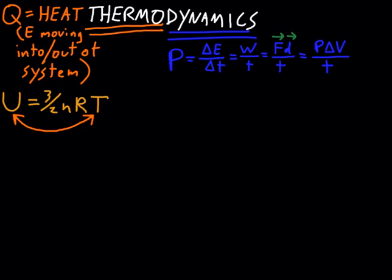Now that we have heat and temperature on the thermo side, and dynamics — power, work, energy — the real bridge you'll be mostly focusing on in the beginning of your thermodynamics class is the relationship between those two. The big relating equation is: delta U, the change in internal energy, is equal to the heat entering or leaving that system, minus the work done by that system.